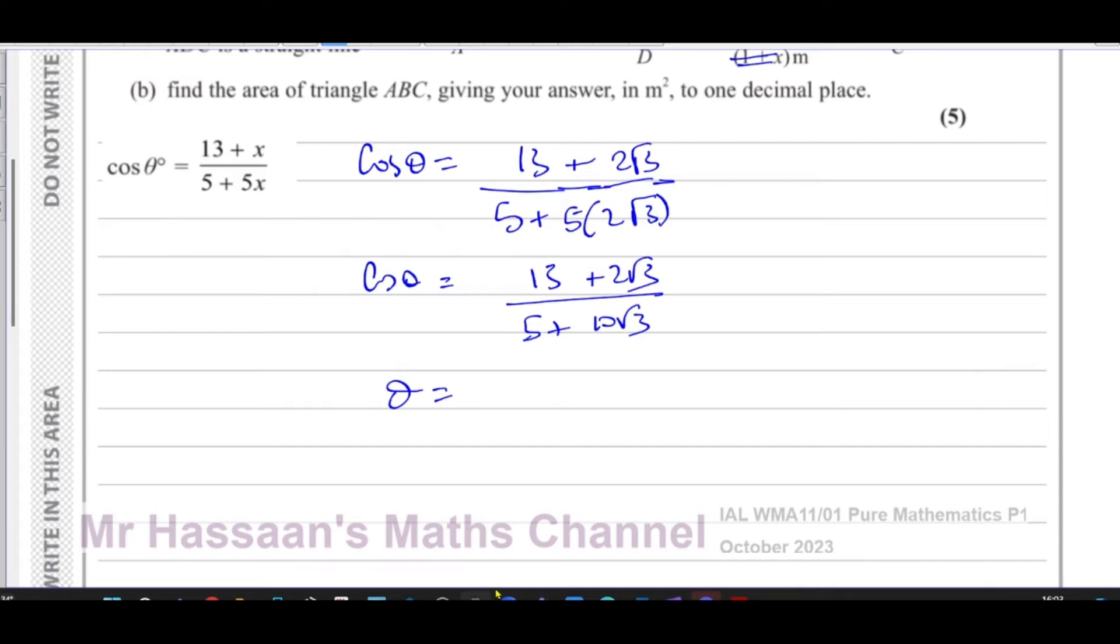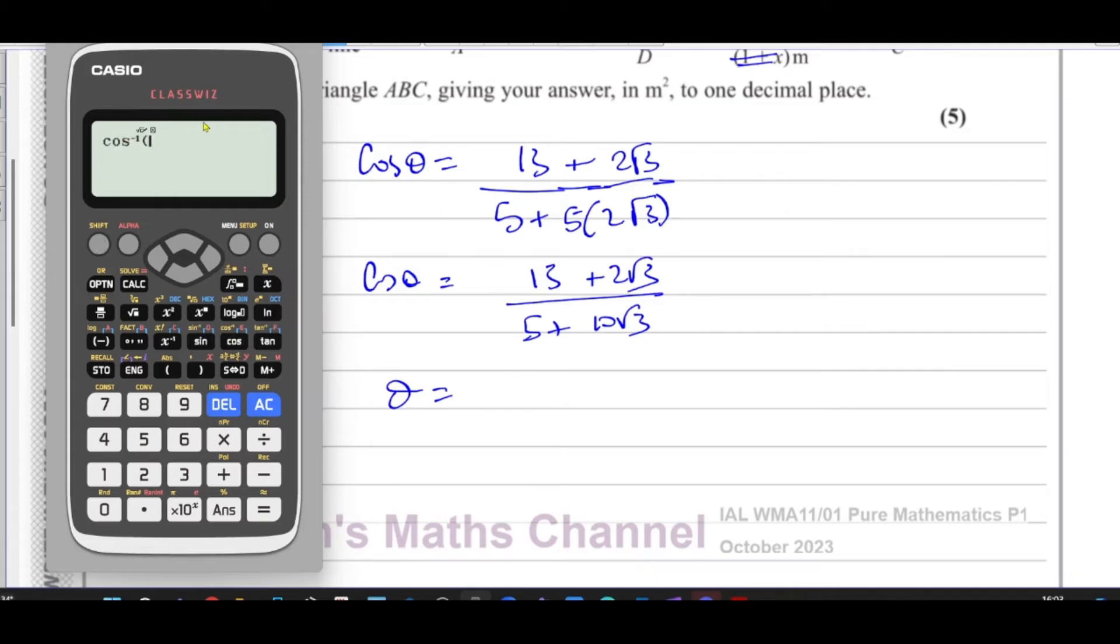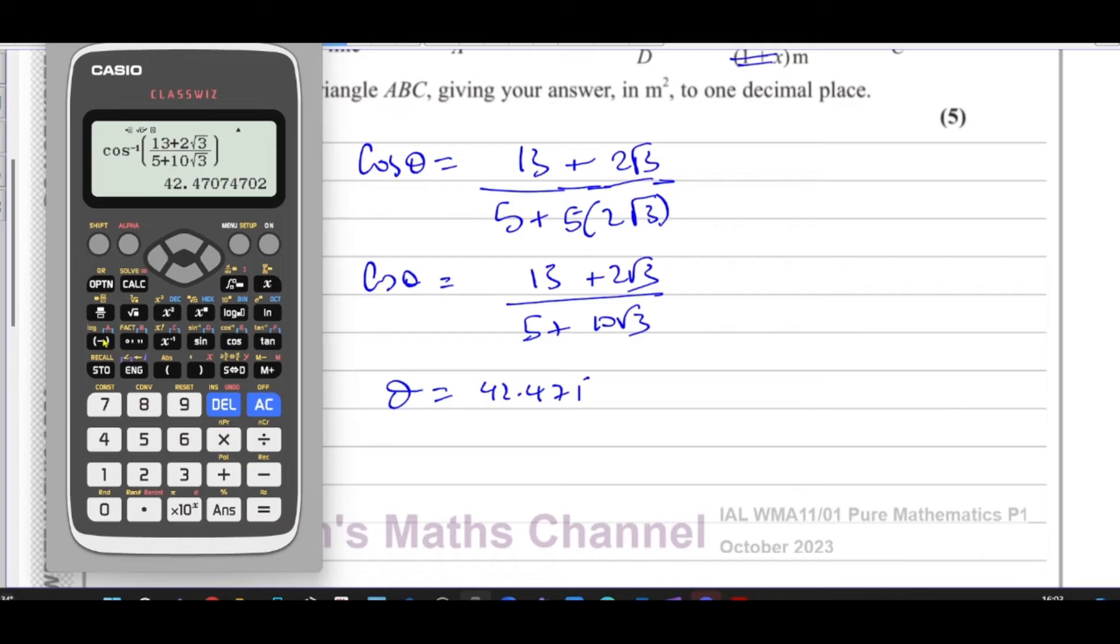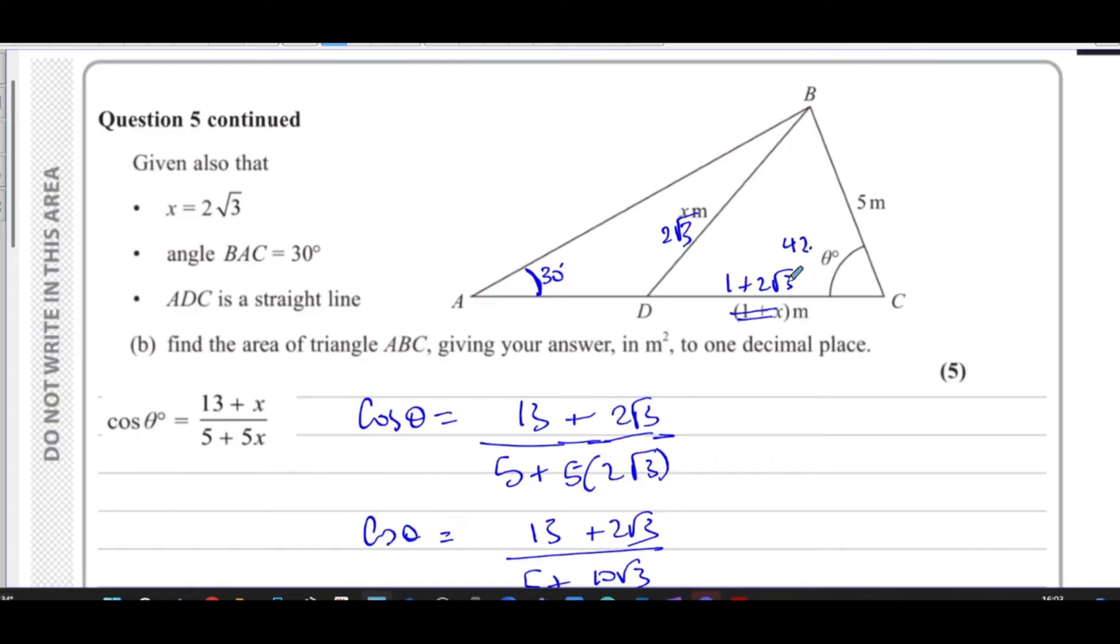Therefore cosine theta is equal to 13 plus 2 root 3 over 5 plus 10 root 3. So then theta is equal to the inverse cosine of all of that. So we take a calculator and we put in these values. Inverse cosine, are we in degree mode? Yes, we are. We have 13 plus 2 times the square root of 3 over 5 plus 10 times the square root of 3. And that gives us our answer, which is 42.471 degrees. What I can also do in case I need it later, I can store this in my calculator as A. So I've stored that.